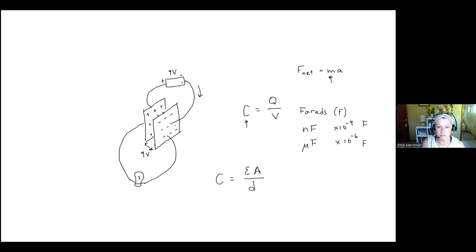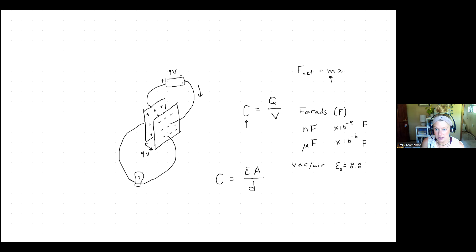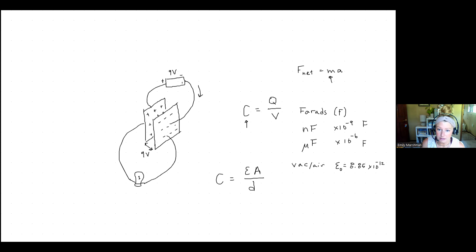Epsilon is called permittivity — electrical permittivity. It describes how well a material allows an electric field to go through it. For vacuum or air, the permittivity is called epsilon naught, which equals 8.85 times 10 to the negative 12th. Epsilon naught is actually related back to our Coulomb constant K — the electric constant from Coulomb's law is equal to 1 over 4 pi epsilon naught.